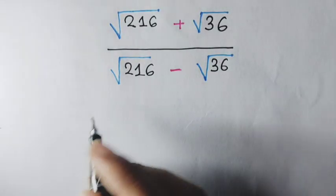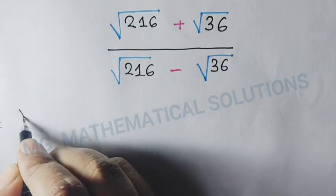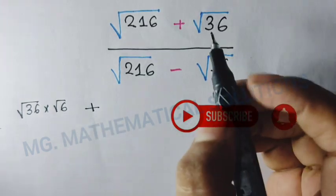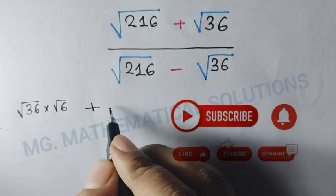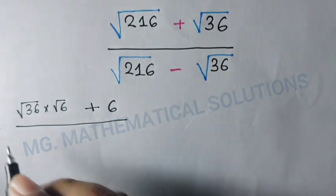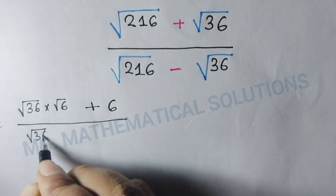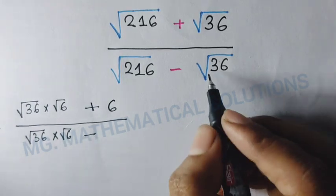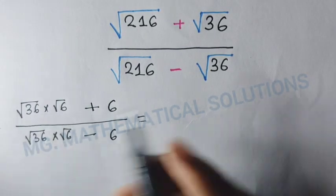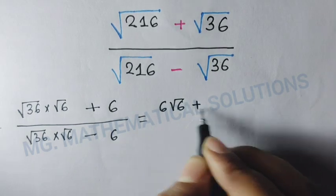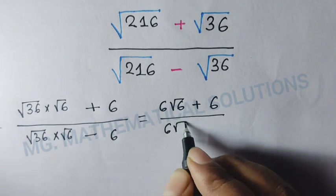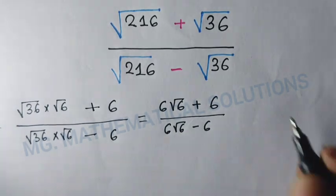This term equals √216, which we can write as √36 × √6, plus √36 which equals 6, divided by √216 written as √36 × √6, minus √36 which equals 6. So the expression becomes (6√6 + 6) / (6√6 - 6).